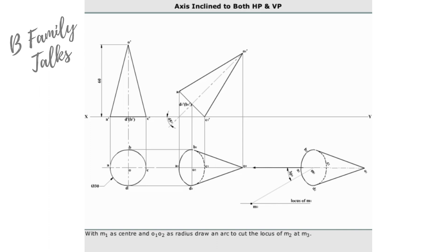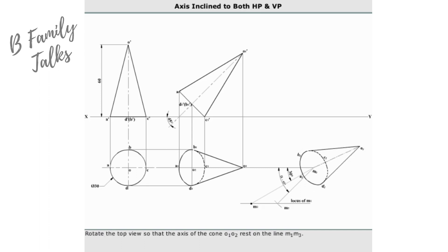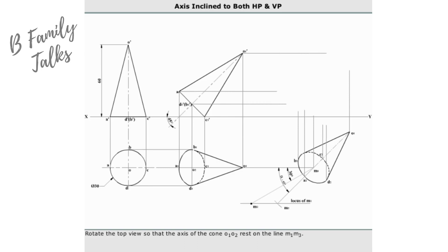With M1 as center and O1 O2 as radius, draw an arc to cut the locus of M2 at M3. Join M1 to M3, which makes the apparent angle of inclination alpha with the XY line. Rotate the top view so that the axis of the cone O1 O2 rests on the line M1 M3.